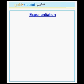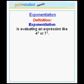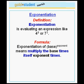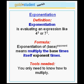In this tutorial, we will learn how to perform exponentiation. Exponentiation is what you do when you evaluate an expression like 4 to the 8 or 7 to the 3. The formula is that the exponentiation of a number that we call the base to the power that we call the exponent means that you multiply the base times itself exponent times. In order to do this, you only need to know how to multiply.